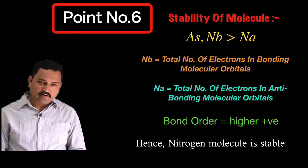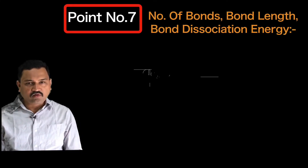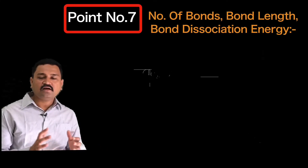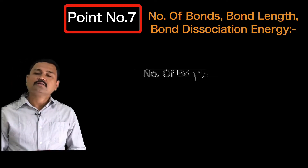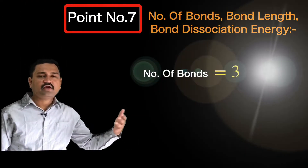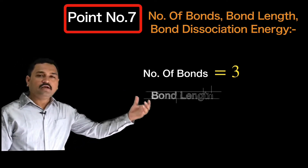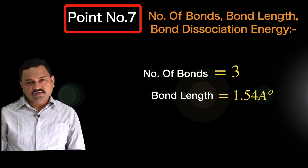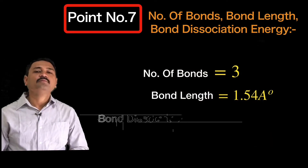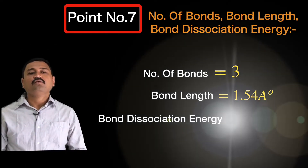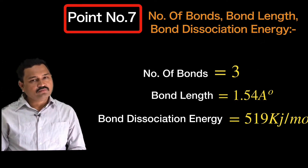Point number seven: bond properties of nitrogen molecule. The number of bonds is three, consistent with the bond order calculated. The bond length of the nitrogen molecule is found to be 1.10 Å, and the bond dissociation energy for the nitrogen molecule is 590 kilojoules per mole.